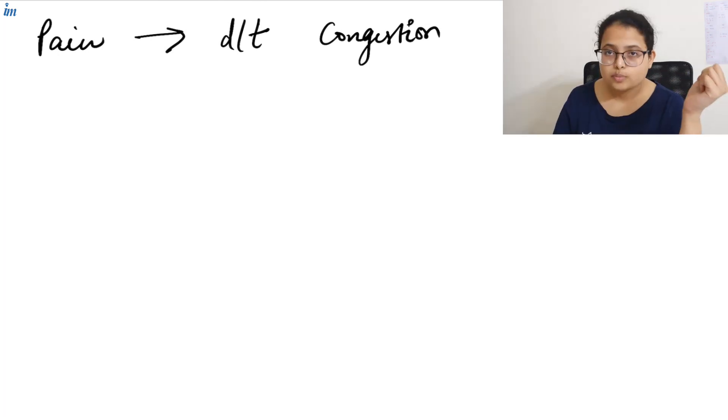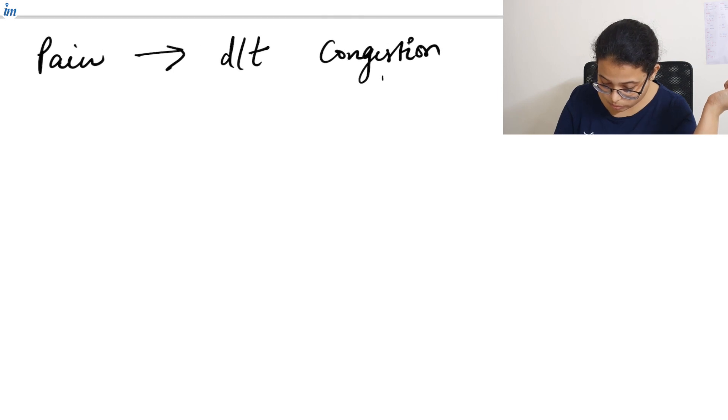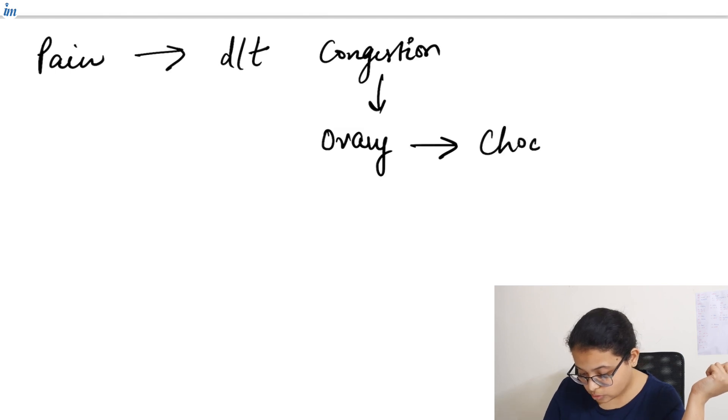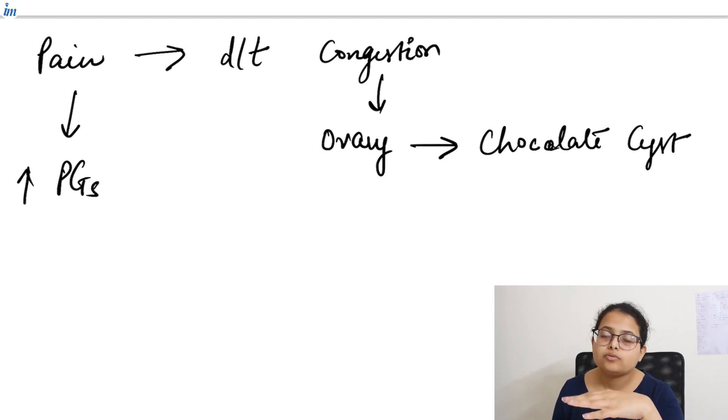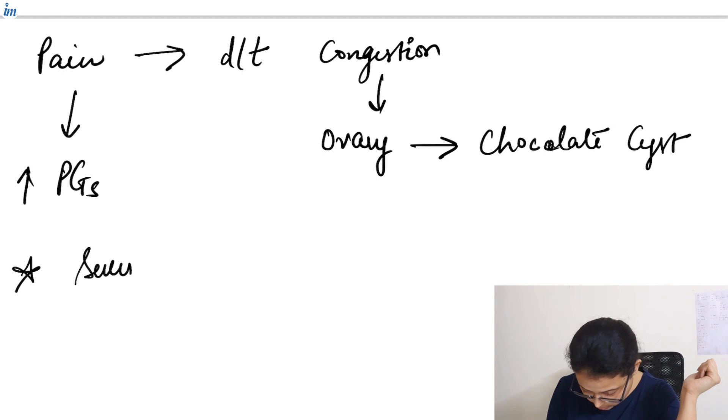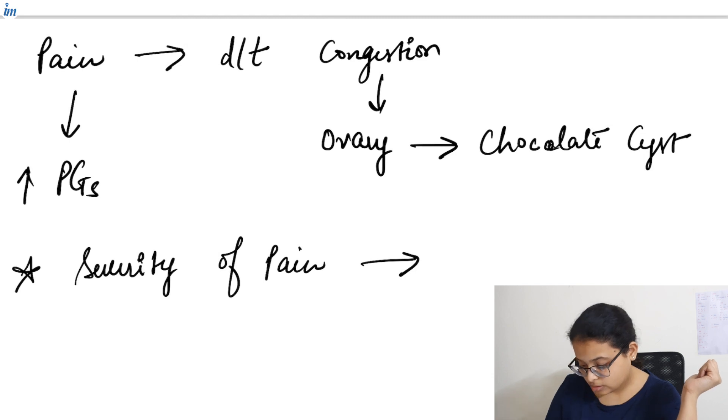And it forms in ovary. This congestion of blood results in the formation of chocolate cyst. Now the second reason for the pain is high levels of prostaglandins. The prostaglandin levels are really high in the peritoneal fluid so it also causes pain. And then the severity of pain in endometriosis is related to the depth of the lesion.